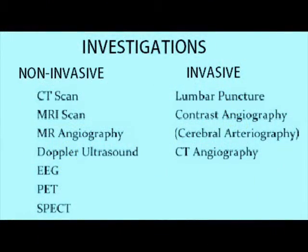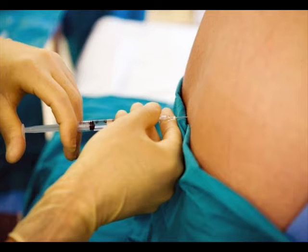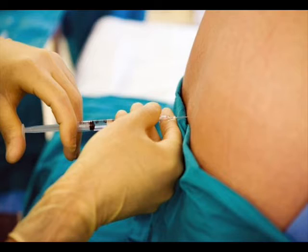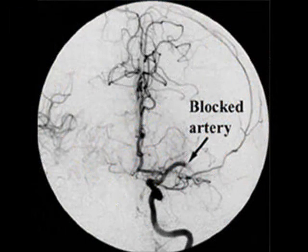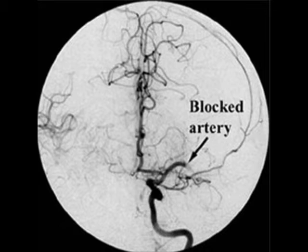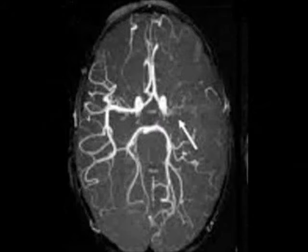To investigate stroke, there are two types of procedures: invasive and non-invasive. For invasive procedures, you can perform a lumbar puncture to aspirate CSF fluid and check for blood — this occurs if there is subarachnoid hemorrhage, where blood leaks into the CSF. You can also perform cerebral arteriography, where a contrast dye is injected and viewed with X-ray to identify any occlusion in blood vessels. CT angiography uses contrast and CT scan together to view the arteries.